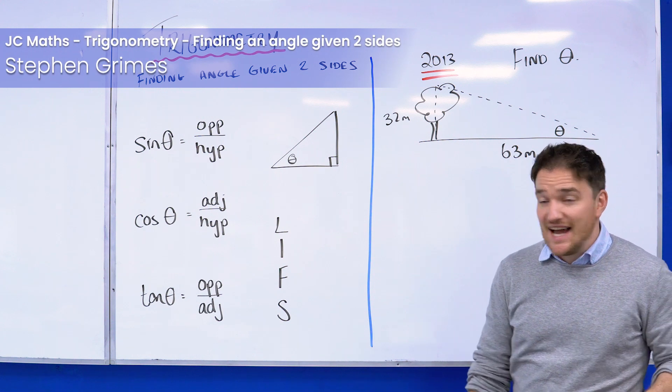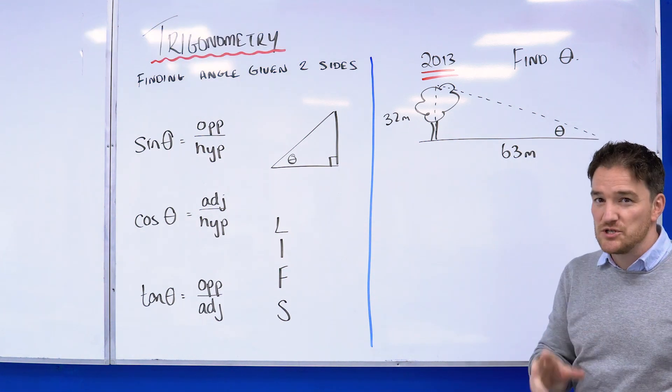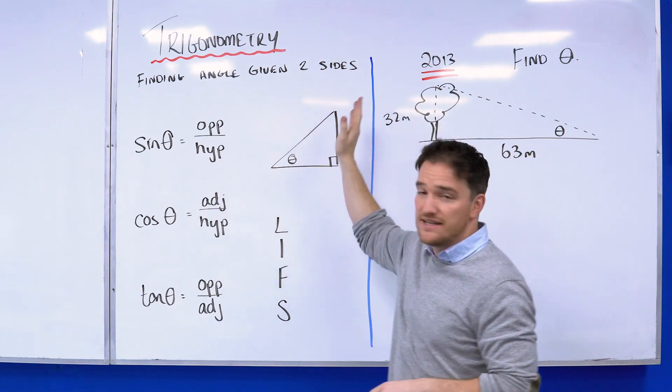Hi guys, this is Steve from the Academy, and today for our Whiteboard Wednesday we're going to take a look at some trigonometry and just focus in on finding an angle given two sides.